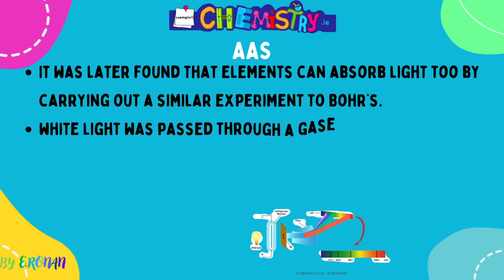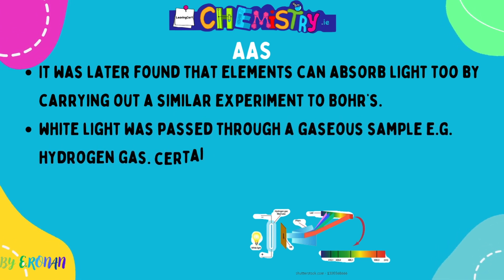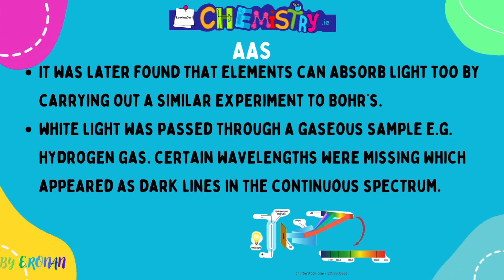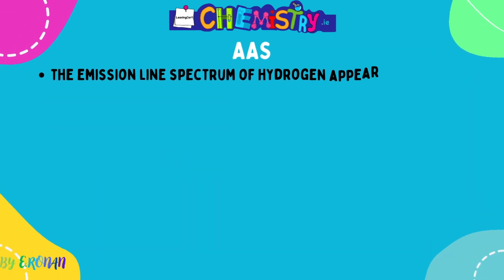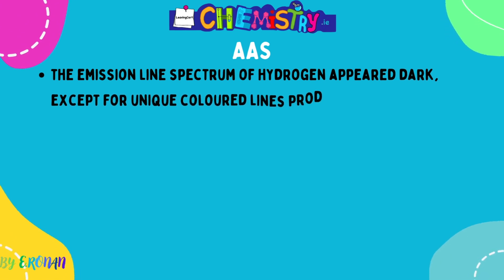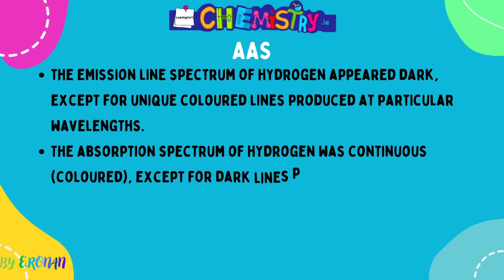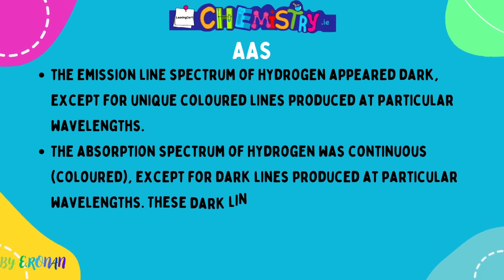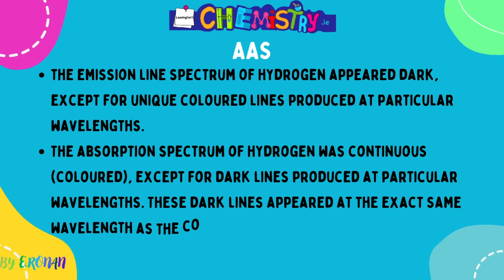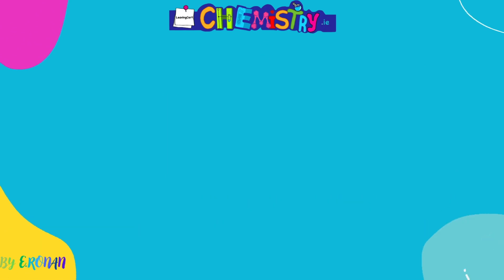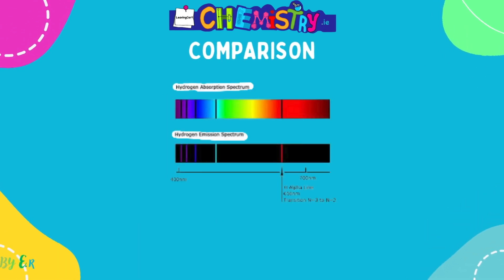Then we have AAS, which stands for Atomic Absorption Spectrometry. It was later found that elements can absorb light too. By carrying out a similar experiment, white light is passed through a gaseous sample — for example hydrogen gas — and certain wavelengths were missing. What appeared was a colored background with dark lines at particular wavelengths.